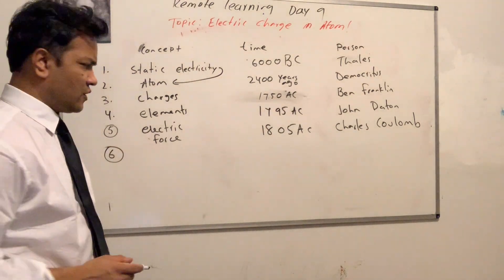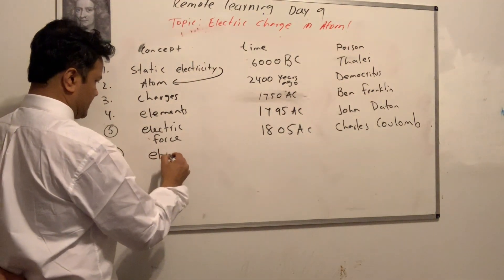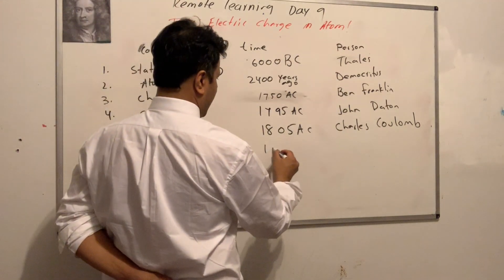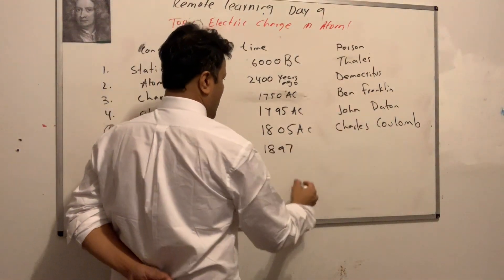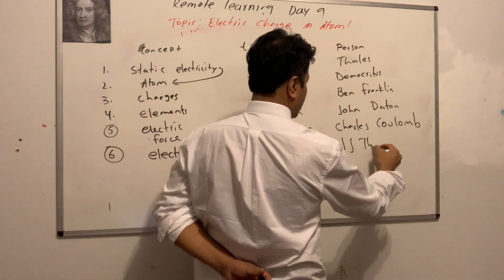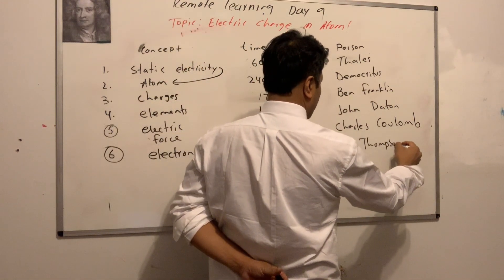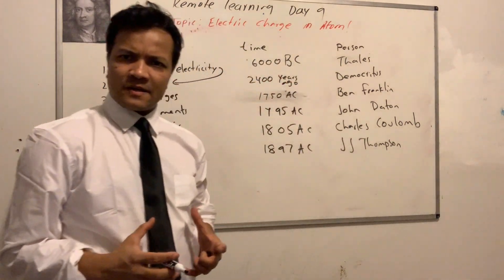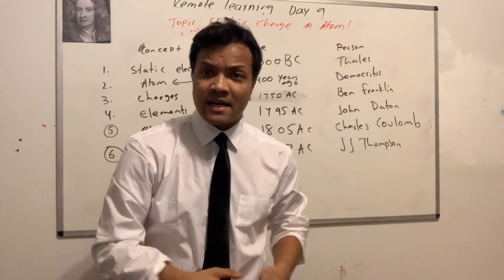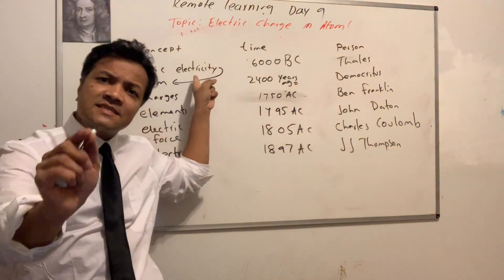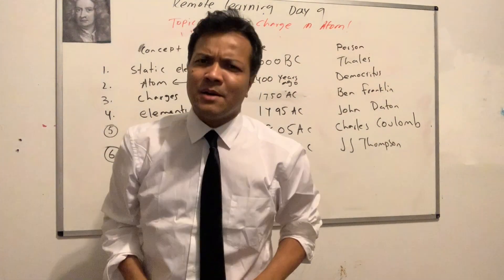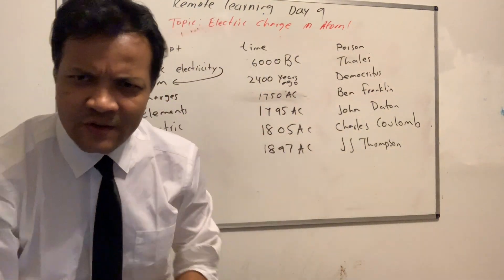Number six is the discovery of electrons. J.C. Thomson, in 1897, discovered electrons inside the atom, telling us that atom is not — as Democritus said — the smallest thing in the universe. There is something smaller than the atom. J.C. Thomson called it the electron.